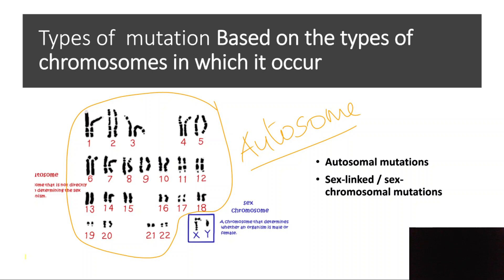In humans, the sex chromosomes are X and Y — females are XX and males are XY. The X and Y chromosomes constitute the 23rd pair and are called sex chromosomes. Mutations that take place in the sex chromosomes are called sex-chromosomal mutations. So there are two types based on location: autosomal mutations and sex-chromosomal mutations.